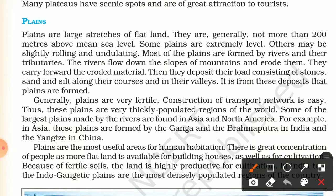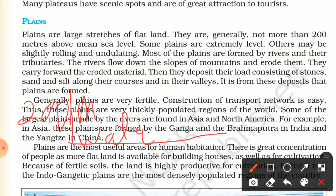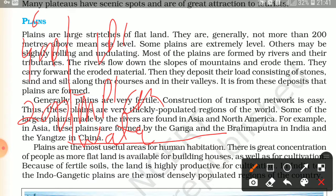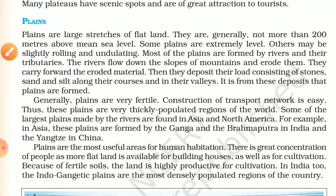Let me explain the sea level. The sea level is the water level of the sea. Plains are found up to 200 meters above sea level. Above 4000 meters there are plateaus, and above 6000 to 8000 meters there are mountains. For example, Mount Everest is 8848 meters in height.